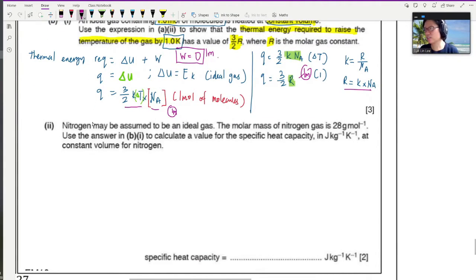Finally, I will give you something to calculate. Nitrogen may be assumed to be ideal gas. All of you who are studying chemistry, don't panic. Assume only. The molar mass of nitrogen is 28 grams per mole, meaning if you have one mole, which is 6.02 times 10 to the power 23 particles, it will weigh 28 grams. Using the answer in B part 1, which is 3 over 2 R, calculate a value of specific heat capacity in joules per kg per Kelvin at constant volume for nitrogen.